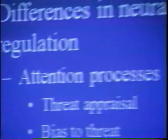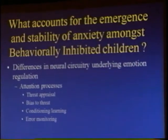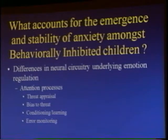We code the child's behavior, and using Ken's play observation scale, we identify those children who are high in what we've described as social reticence, which is really onlooking, unoccupied behavior — watching the other children as they go about playing in the room — while our behaviorally inhibited child is off on the side. So, what accounts for the emergence and stability of anxiety amongst behaviorally inhibited children?